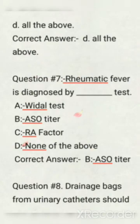Question number 7: rheumatic fever is diagnosed by which test? Options are: vital test, ASO titer, RA factor, none of the above. Correct answer: ASO titer.